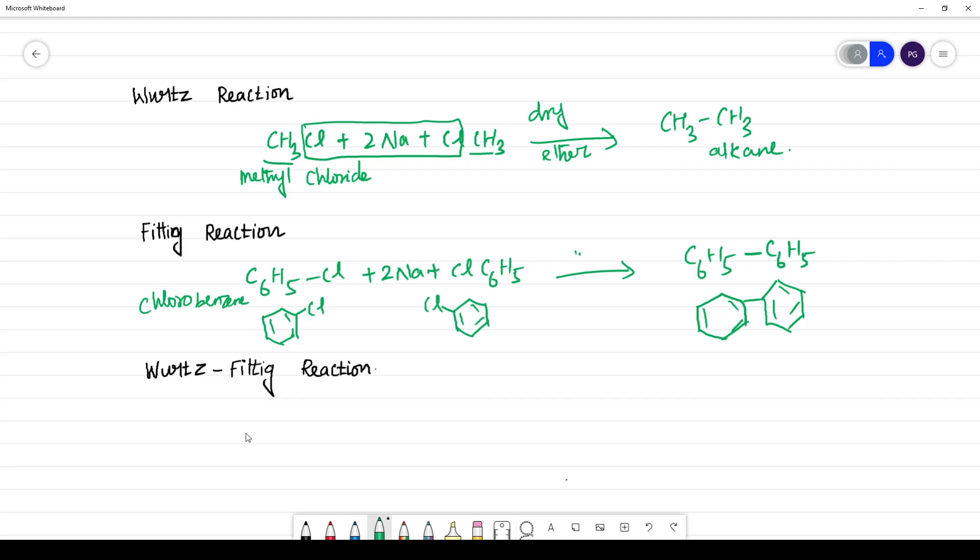And what is Wurtz-Fittig reaction? One aliphatic plus one aromatic in presence of dry ether. What will it give? CH3-C6H5.